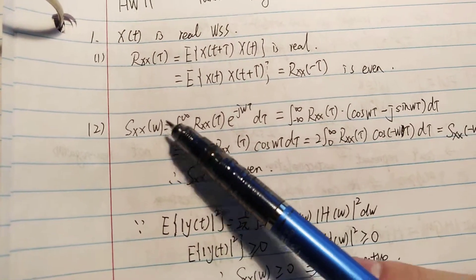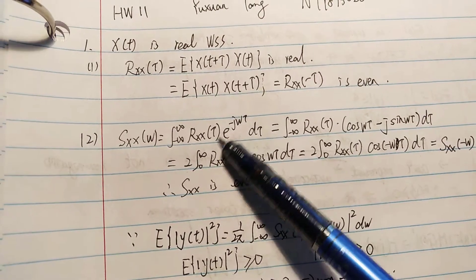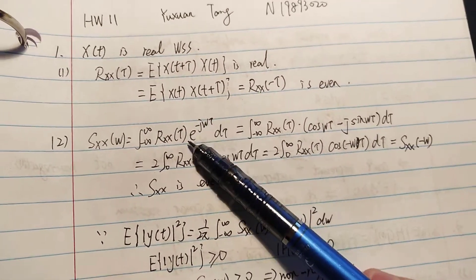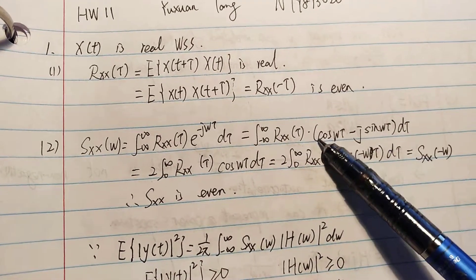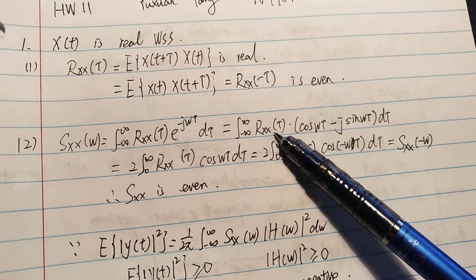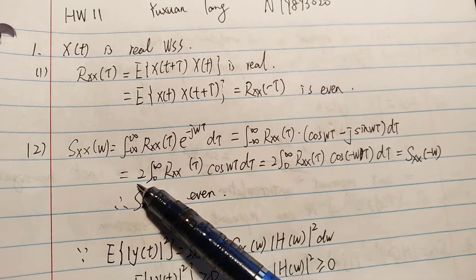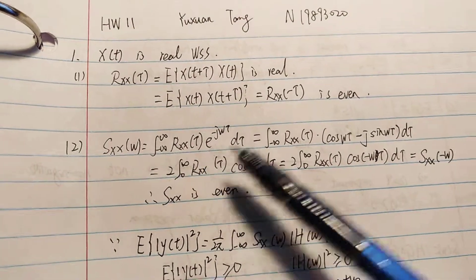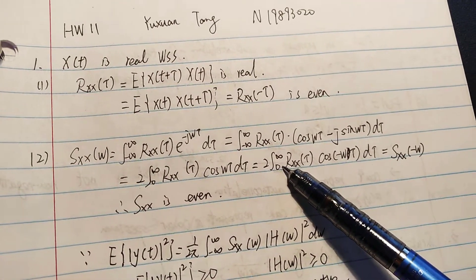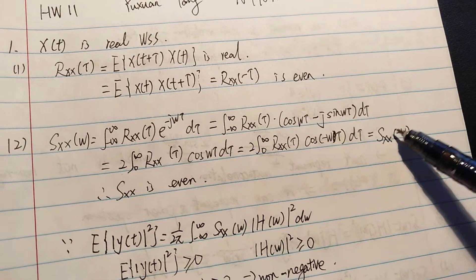Because Sxx omega equals to minus infinity to infinity, Rxx tau times E minus J omega tau D tau. And here, we can use Euler's formula in writing this form. And because this is odd, this is even, so there is no more. And this is even, this is even, we can write it into 2 from 0 to infinity, Rxx tau cos omega tau D tau. Here, this is also equal to this one. This is equal to Sxx minus omega, so Sxx is even.